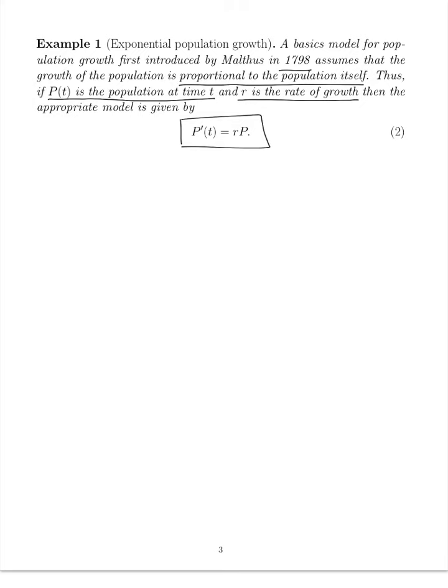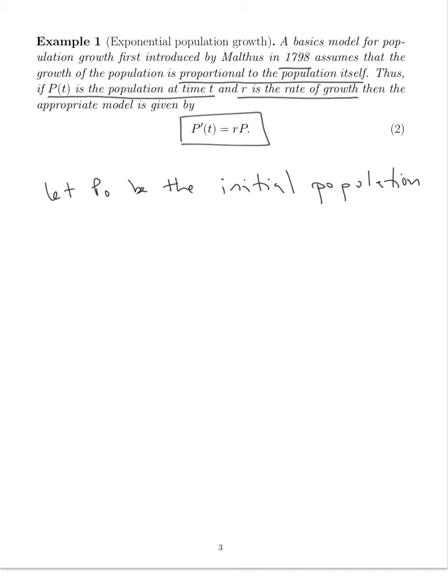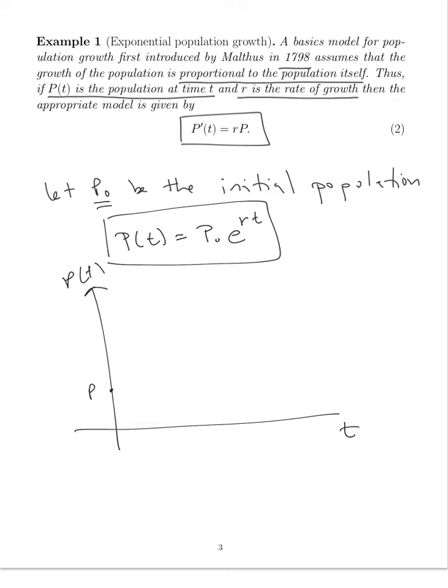So if the initial population is P zero, we know how to solve this. We, in fact, know that P of T is going to be P of zero, the initial population, times e to the RT. So that's the solution, which if I plot P of T, let's say this is P zero, I'm going to be growing exponentially, which is not very realistic.